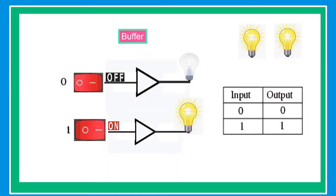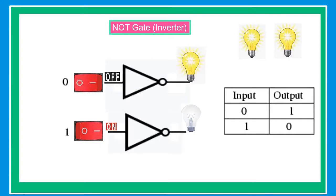A buffer gate has only a single input and a single output. If it receives zero as an input, the output is also zero. Similarly, when it receives one as an input, the output is also one.